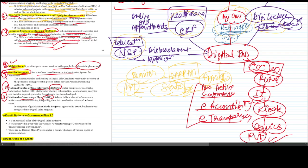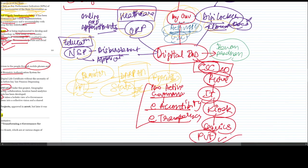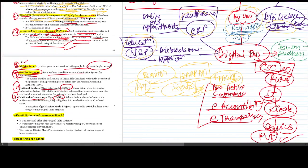Jeevan Pramand is an Aadhaar-based biometric authentication system for pensioners. This is an important scheme. Jeevan Pramand uses biometric-based authentication, a biometric authentication system for pensioners to verify authenticity of digital life certificate without the necessity of pensioner being present in person before his pension dispensing authority PDA. Pensioner doesn't need to be present, but online they will get their pension certificate.